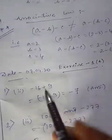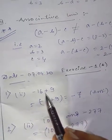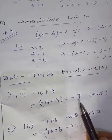Now we will start Exercise 1a. First one is very easy: -16 + 9, which equals -7.